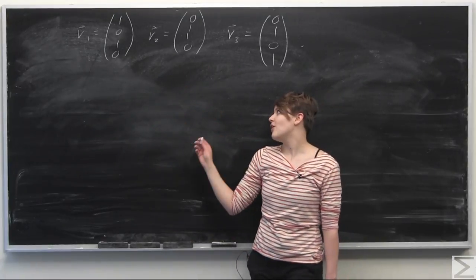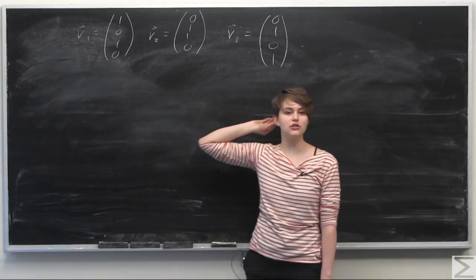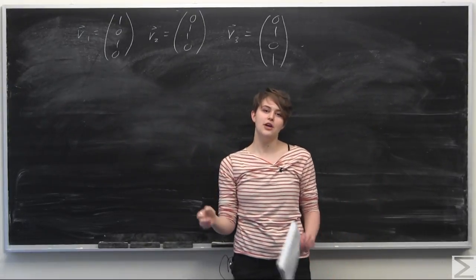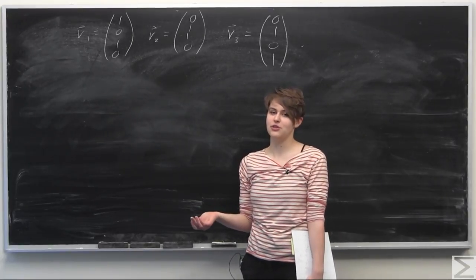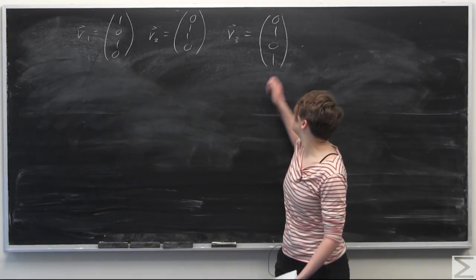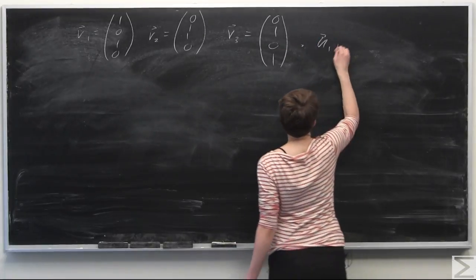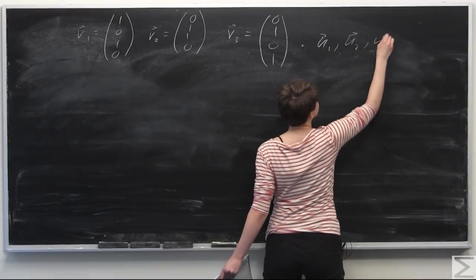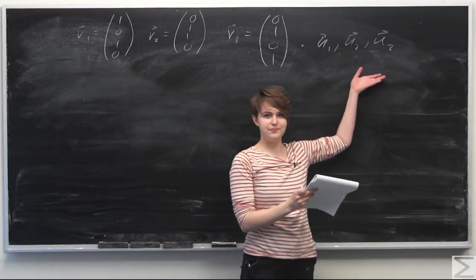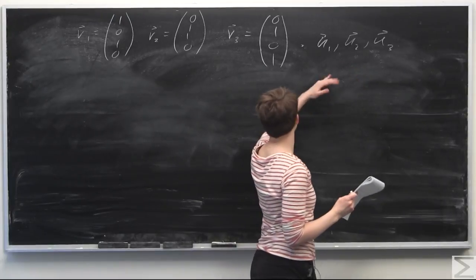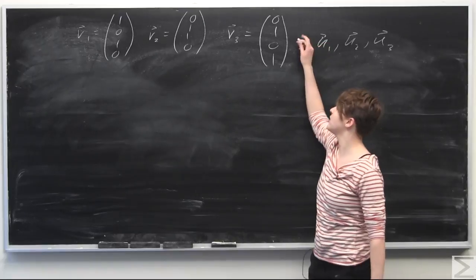A good way to find the orthonormal basis for the vector space would be to use the Gram-Schmidt procedure. I'm going to assume for the purposes of this video that the viewer is familiar with the Gram-Schmidt procedure. Our goal is to find u1, u2, and u3 — all unit vectors — that form an orthonormal basis for v1, v2, and v3.